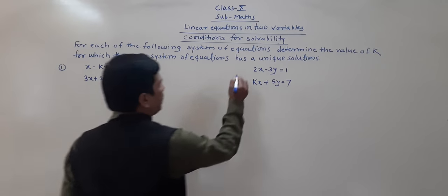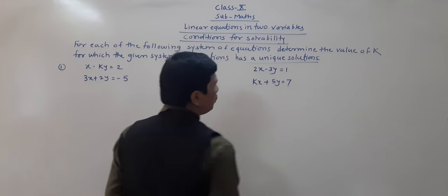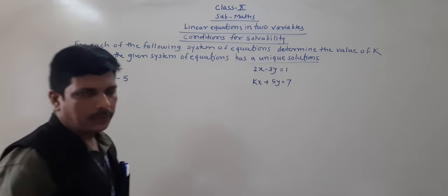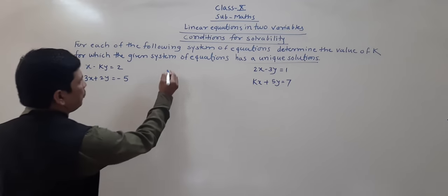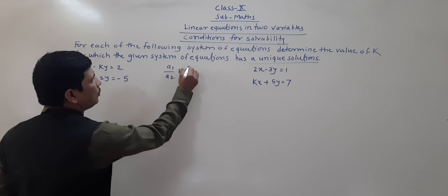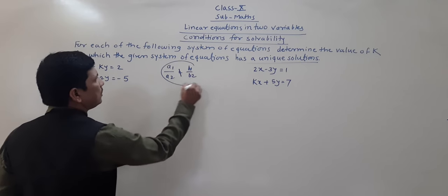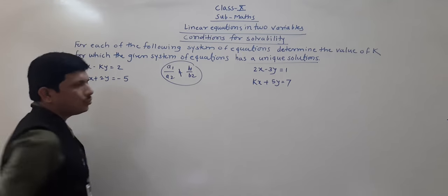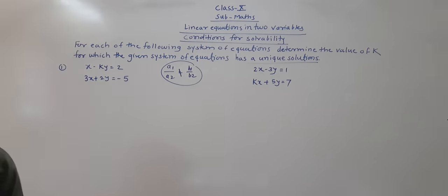For a unique solution, as everybody knows, what we are going to use is: a1 by a2 is not equal to b1 by b2. This ratio we are going to use. This condition we are going to use for the unique solution.